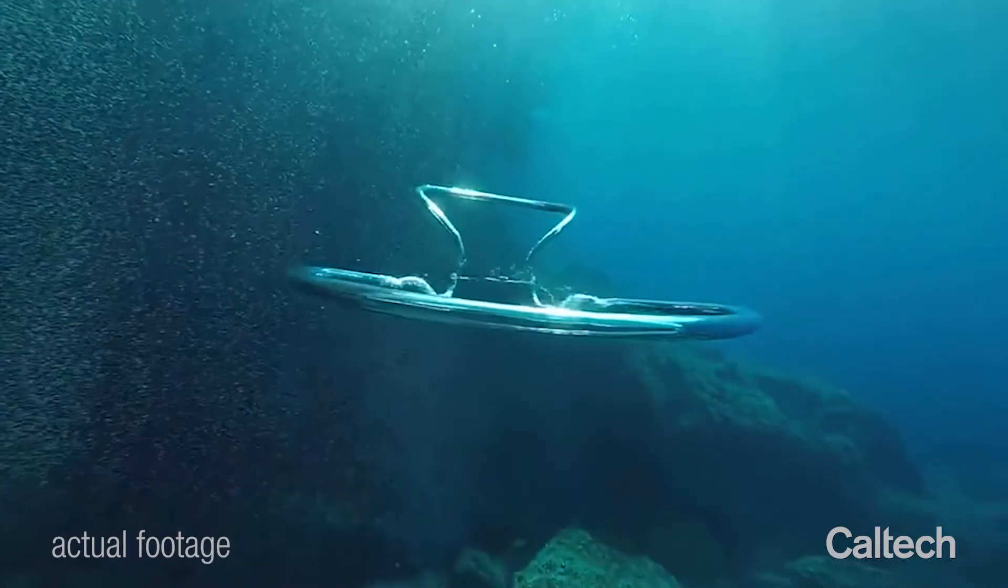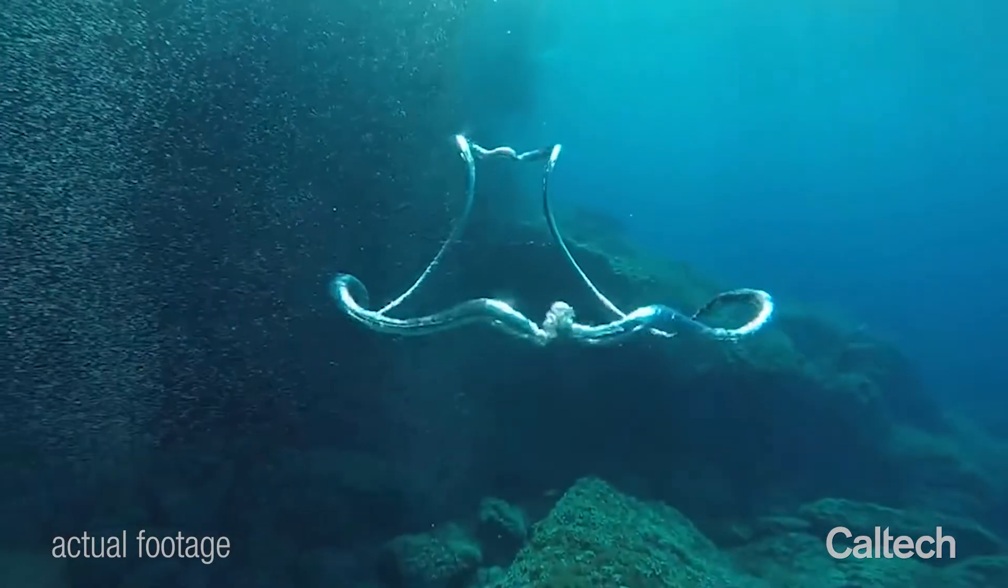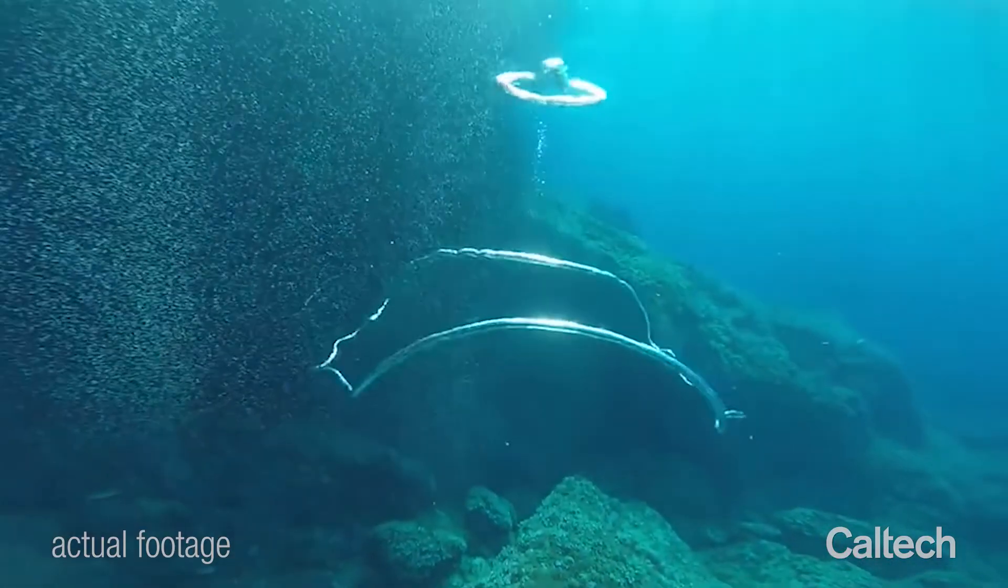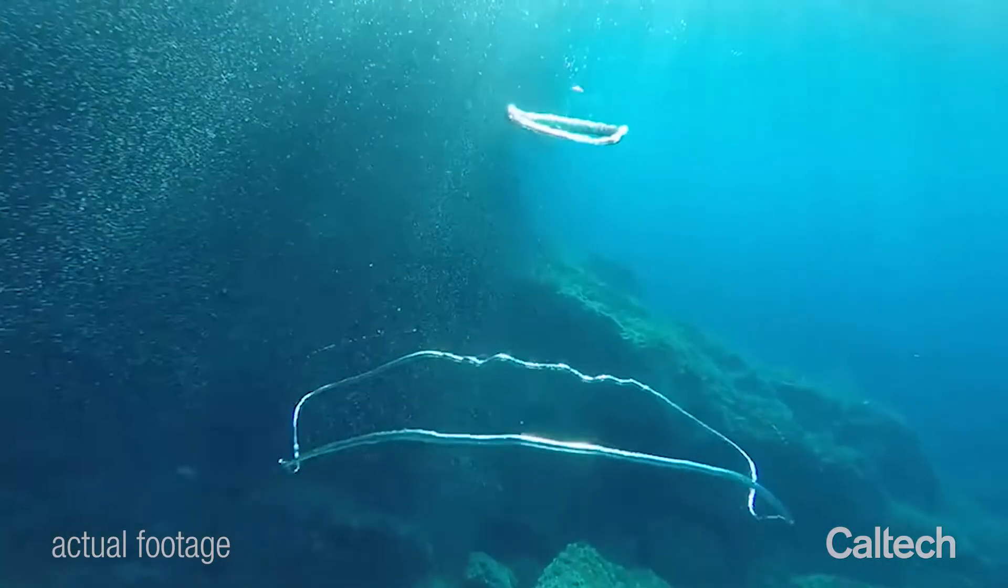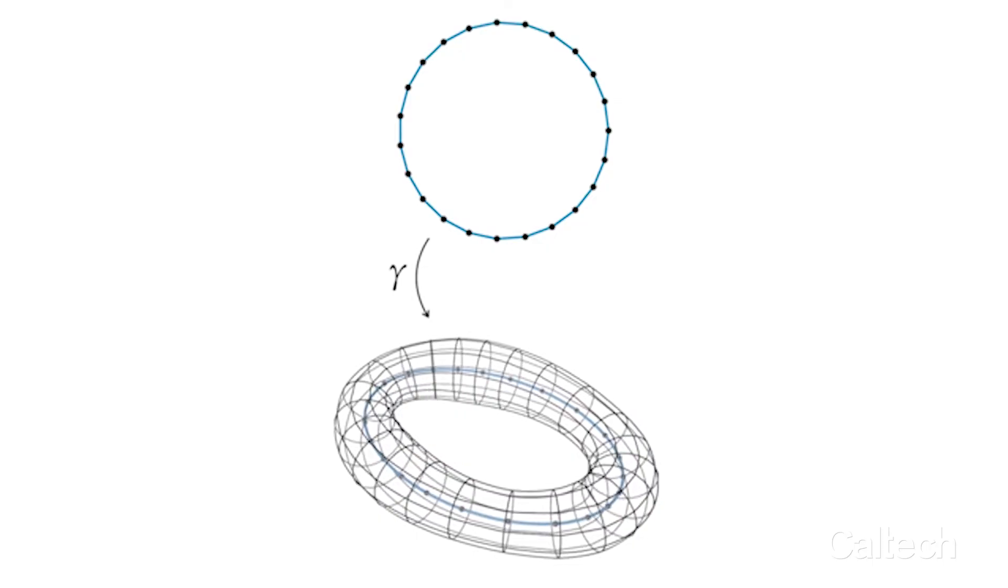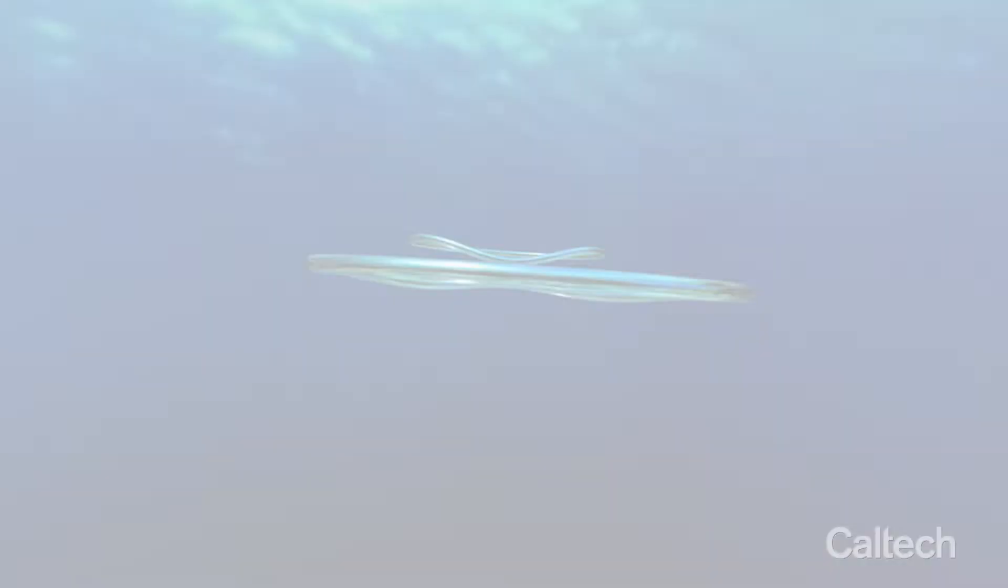In the case of bubble rings, we see these thin tubes moving, deforming, collapsing, splitting. So what's a nice abstraction? Well, take a curve that describes the center line of that tube together with its thickness, and see how these variables develop over time.